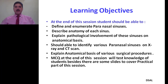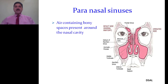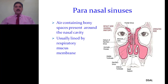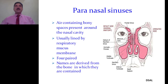MCQs at the end of this session will test the knowledge of students. There are also some slides to cover the practical part of this session. Paranasal sinuses are air-containing bony spaces present around the nasal cavity. They are lined by respiratory mucous membrane. There are four paired paranasal air sinuses, and the names of these sinuses are derived from the bone in which they are contained.